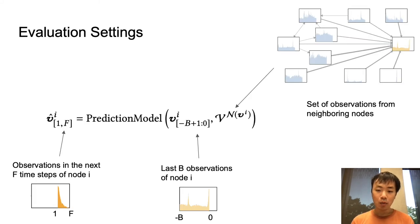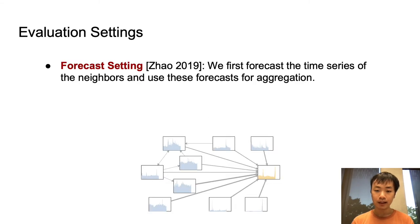So now let's go back to the task definition. In this paper, we consider two different evaluation settings, which changes what goes inside the second term of our model. In the first setting, which we call the forecast setting, we first have to run a forecasting model on the neighboring nodes, and then we aggregate information of these neighbors. This setting is useful when we want to actually forecast the future.